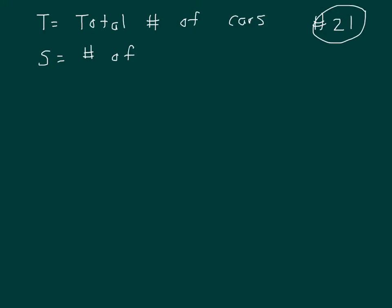This is number 21 in Dallas Efficiency, and we're trying to find how many cars are to be sold. I'm letting that be the variable T, and I'm letting S be the number of salespeople.